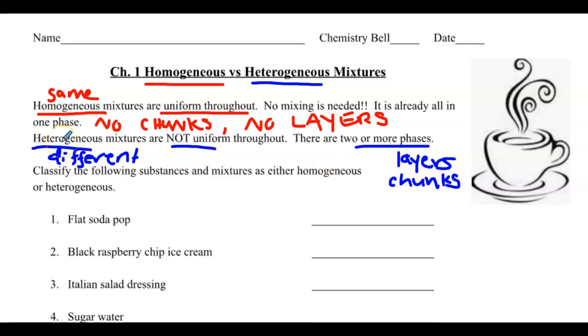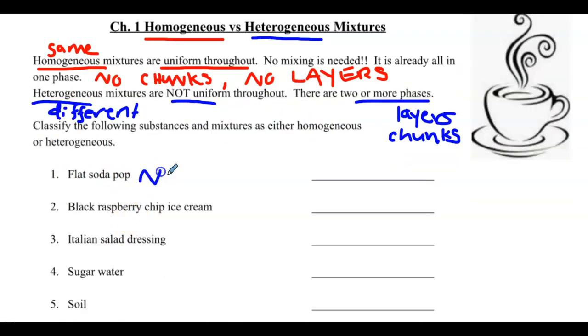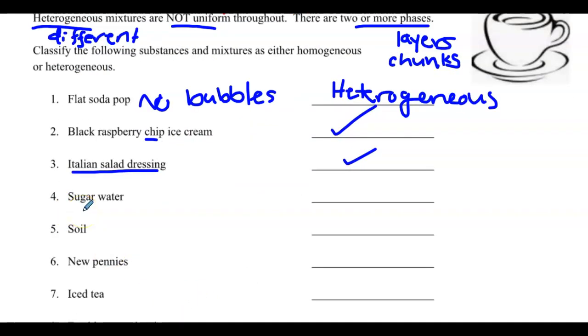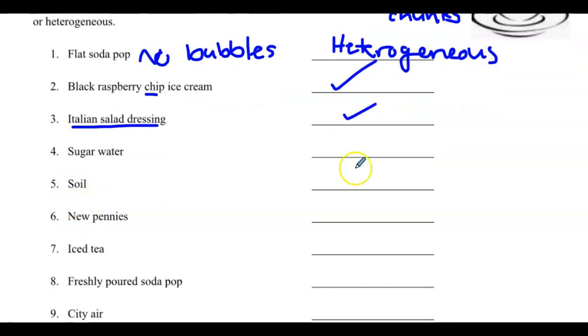But a heterogeneous, that prefix means different. So they are not uniform. There are two or more phases, or there's layers, or there's chunks of stuff. Let's go through first and look at things that we think are heterogeneous, with different layers or chunks you could reach in and pick out or separate off. Flat soda pop. No bubbles. So if you drink some flat Coca-Cola and there's no bubbles, it's uniform throughout. Black raspberry chip ice cream. There's going to be chunks of black raspberries in an ice cream base. That's heterogeneous. Italian salad dressing. There are chunks and layers.